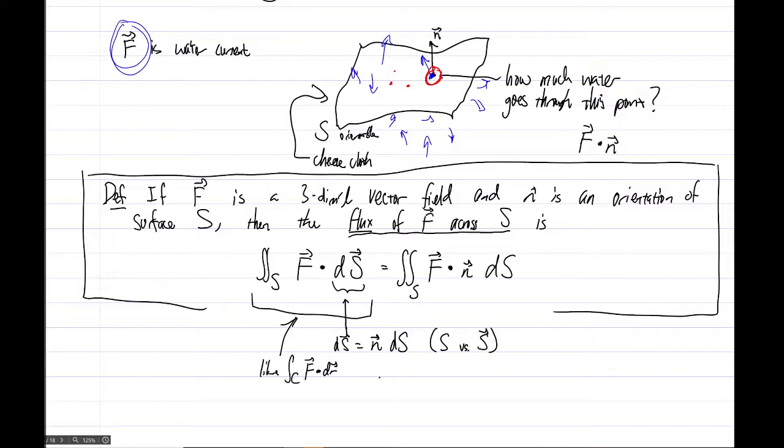And so just like here you used to have dr was equal to r prime of t dt, in the same way now, so like this, we now have dS arrow is n vector dS no arrow. And then finally, this part right here, this vector field f dot orientation n, that's going to be now the lowercase f that we were speaking of at the beginning.